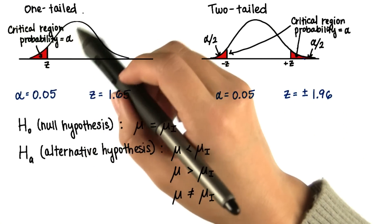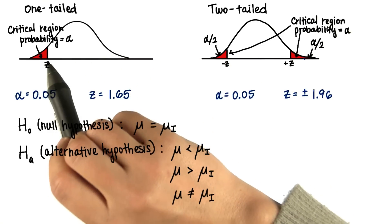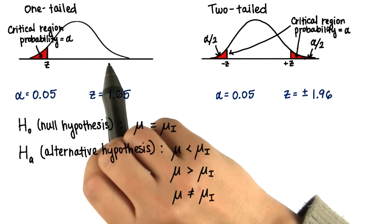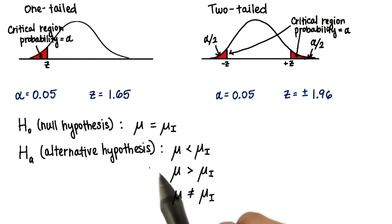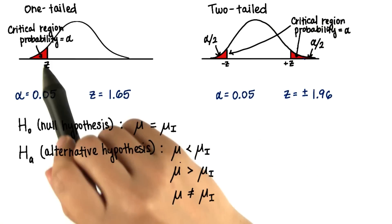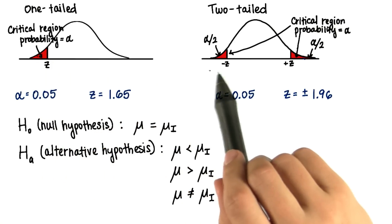Note also that for a one-tailed test, the critical region could be on the left tail, not just the right. And the alternative hypothesis guesses that there is a significant difference, and that means that our sample mean will lie somewhere in the critical region.